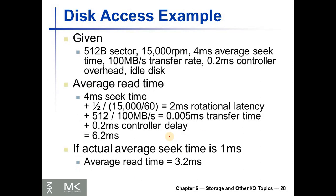Let's take an example. Assume that we want to read 512 bytes, we want to read one sector from a disk that rotates 15,000 revolutions per minute. It has 4 milliseconds average seek time.